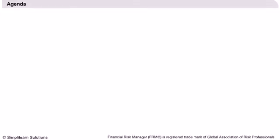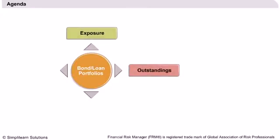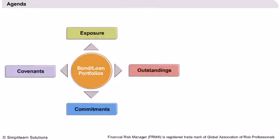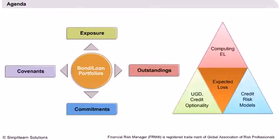Agenda: We will begin the session by introducing the concepts of bond and loan portfolios. We will learn about the various aspects of a loan such as outstandings, exposure, covenants, and commitments. We will then learn about expected loss on a loan in the case of a default, and how to calculate it. The concept of Usage Given Default, or UGD, will also be introduced — which is similar to the option of drawing an amount during distress.